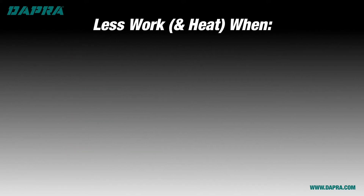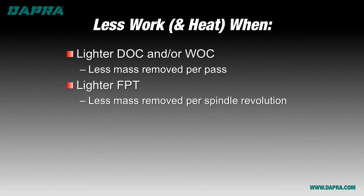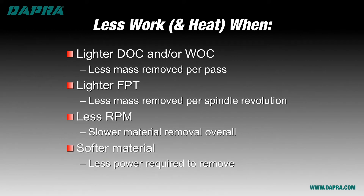On the flip side, we will do less work and tend to create less heat when we program for a lighter depth of cut or width of cut, use a lighter chip load or feed per tooth, program at a lower RPM or speed, and when cutting a softer material. These are all factors that create less heat and pressure, potentially allowing us to operate in the higher end of the speed and feed ranges.